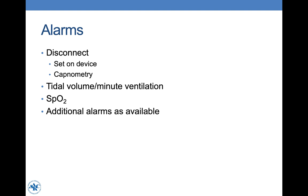It is important to set alarms just as we would with an ICU ventilator. The most important alarm is a disconnect alarm — set an alarm so that if the circuit becomes disconnected from the endotracheal tube, there is a prompt alert. For many of these devices, a disconnect alarm can be set directly in the device. If capnometry is available, it can also serve as a disconnect alarm. If possible, set alarms for tidal volume and minute ventilation, as well as an alarm on the pulse oximeter for low oxygen saturation. Some bi-level devices have additional alarms that should also be set with patient safety in mind.